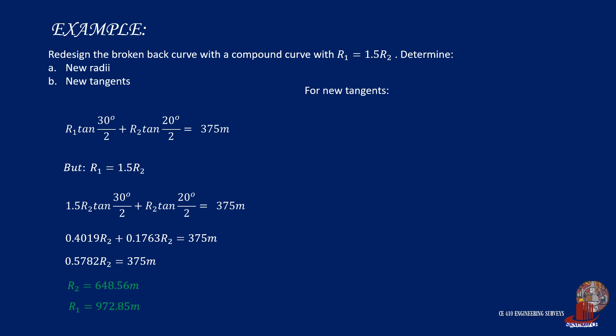For the new tangents, simply complete the formula by plugging the values of the radii. So x, which is the tangent of the first curve, will be computed as 972.85 times tangent of 15 degrees, which would turn out as 260.67 meters.